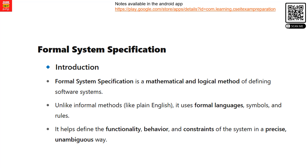Formal System Specification is a mathematical plus logic method of defining software systems. When software development starts, requirements are gathered into an SRS document. Using mathematical models, symbols, and state transitions, a formal representation is created. Formal System Specification is the first level simplified version of software development, providing detailed notes on the system.